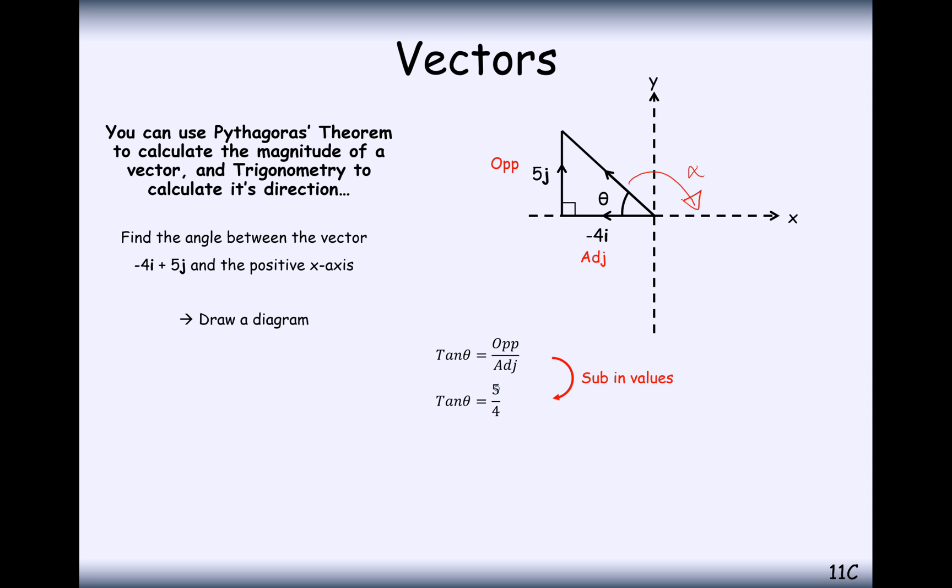What we have here is tan theta of opposite over adjacent, 5 over 4. Notice here how I'm just using the value of 4 rather than minus 4 because I'm just working out the angle here on this triangle with positive distances on its lengths. So it's tan minus 1 of 5 over 4, which is 51.3.